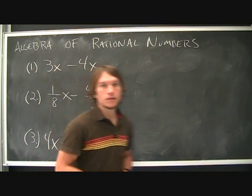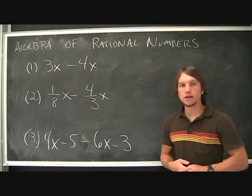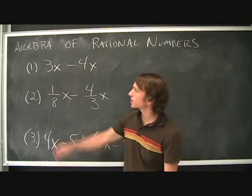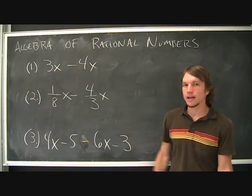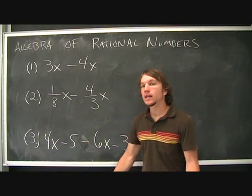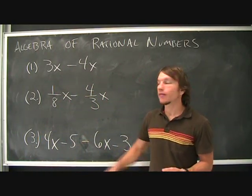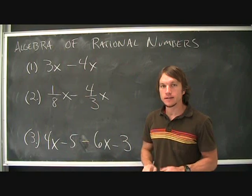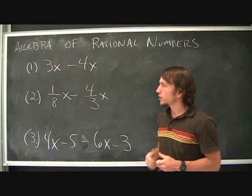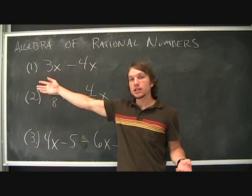This chapter is titled The Algebra of Rational Numbers. So now we get into some algebra. Very basic stuff we're going to do with x terms. In the next chapter we'll be solving equations for an unknown variable. Most of the time we'll call it x. But before we do that we need to look at operations on these algebraic expressions.